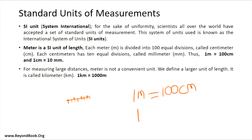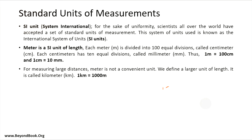If you divide one centimeter into 10 small divisions, it becomes 10 millimeters. So: one meter equals 100 centimeters, and one centimeter equals 10 millimeters. For measuring larger distances, meter is not a convenient unit, so we have the kilometer — one kilometer equals 1000 meters. These are the standard SI units of measurement.